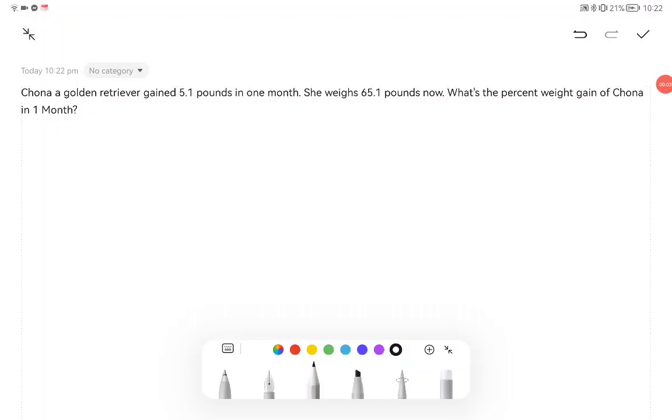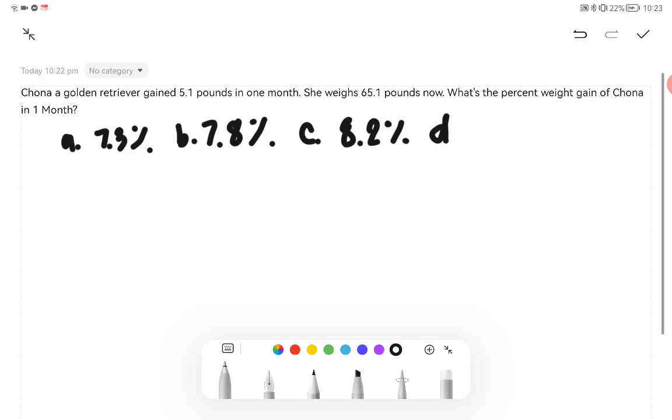Jonah, a golden retriever, gained 5.1 pounds in one month. She weighs 65.1 pounds now. What is the percent weight gain of Jonah in one month? We have our choices here: letter A, 7.3%; B, 7.8%; C, 8.2%; and D, 8.5%. So let's go ahead and solve this.